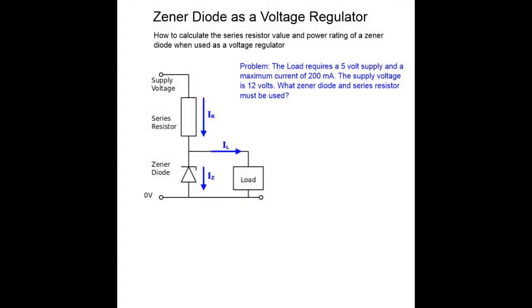This video is about calculating the values of the series resistor and the various power ratings of the resistor and the Zener diode when you want to use the Zener diode as a voltage regulator. It's a very standard problem and here is our problem.